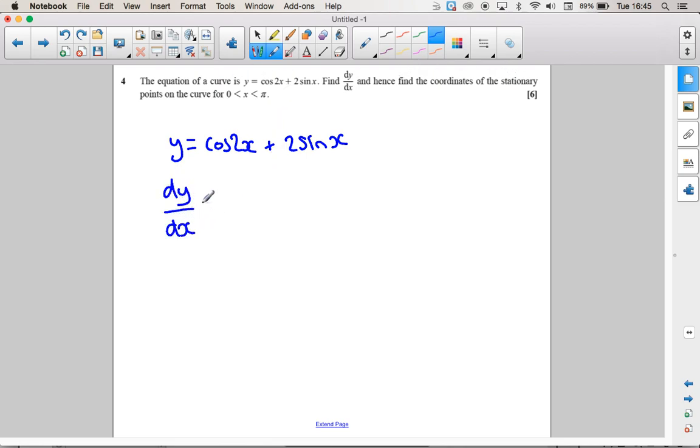So when you differentiate a cos you get minus sin, but we've got a cos 2x so I'm going to use the chain rule and times by the differential of this that I pretend was an x, it's going to be minus 2 sin 2x. If I differentiate sin x I just get cos x, so I'm going to get 2 cos x.